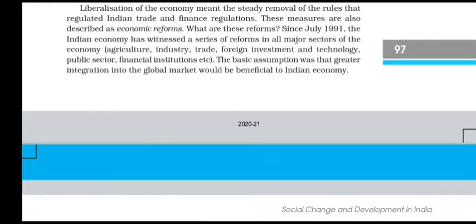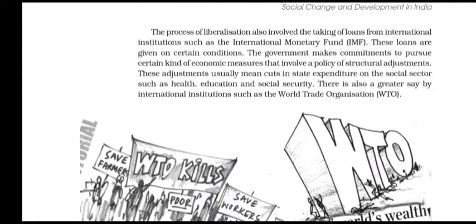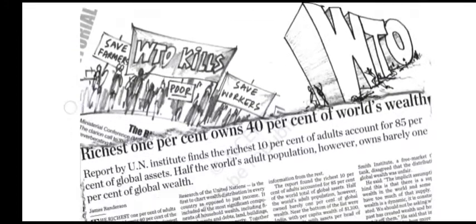Since July 1991, the Indian economy has witnessed a series of reforms in all major sectors. The basic assumption was that greater integration into the global market would be beneficial to the Indian economy. The process of liberalization also involved taking loans from international institutions such as the International Monetary Fund. These loans are given on certain conditions — the government makes commitments to pursue certain economic measures involving a policy of structural adjustments. These adjustments usually mean cutting state expenditure on the social sector such as health, education and social security, with greater say given to international institutions such as the World Trade Organization.